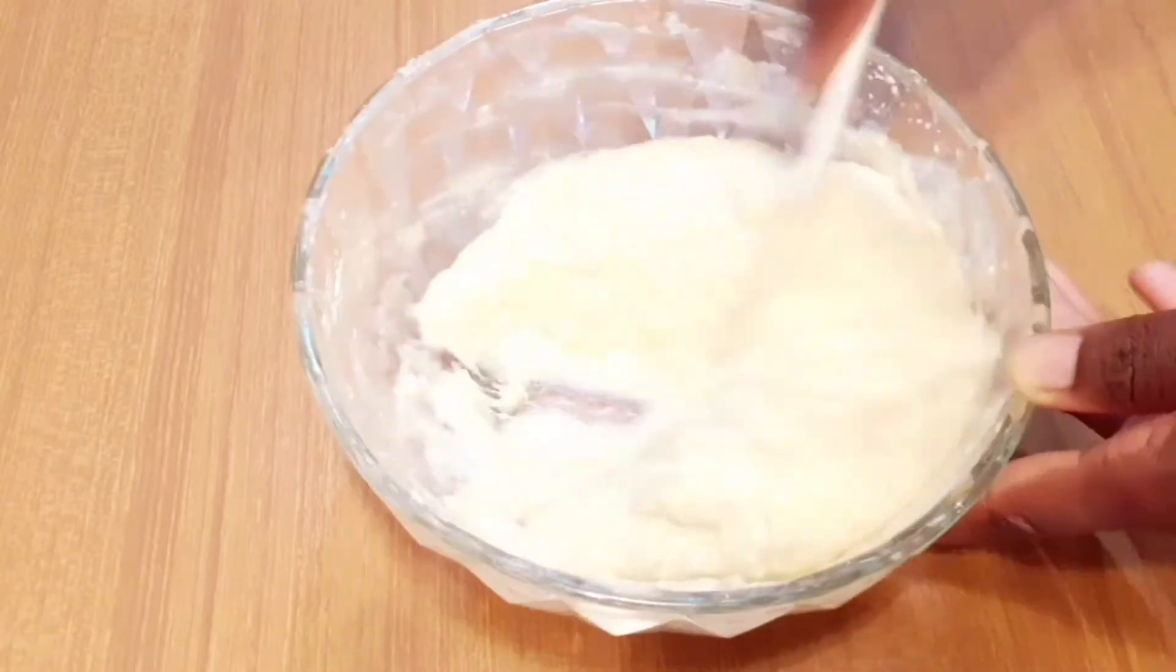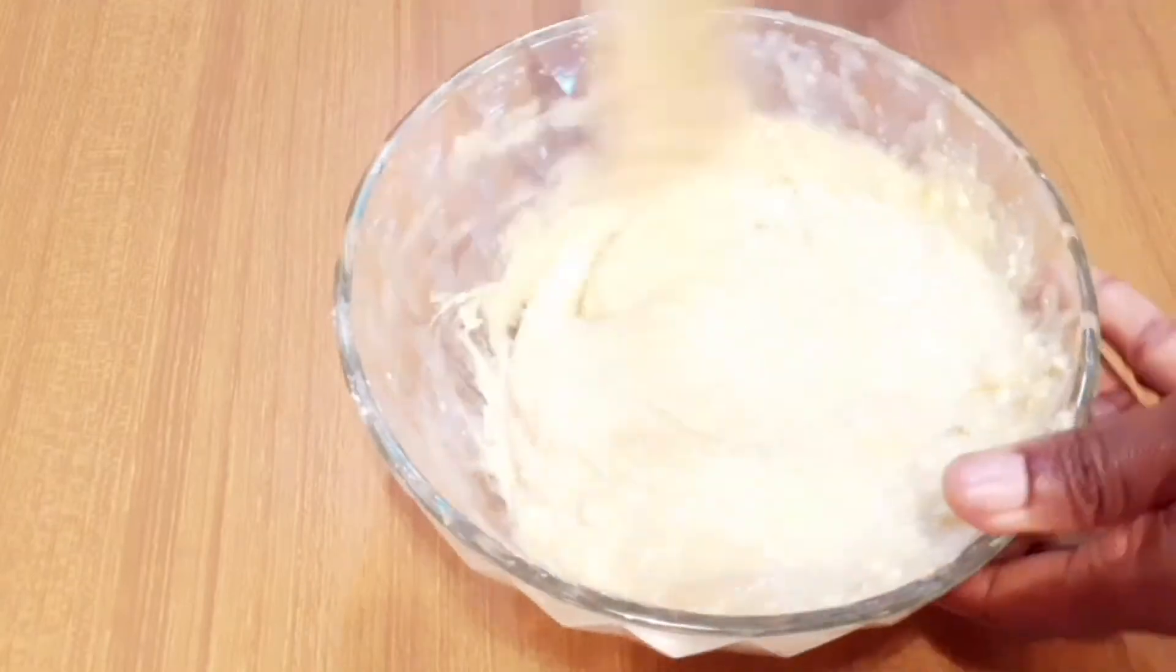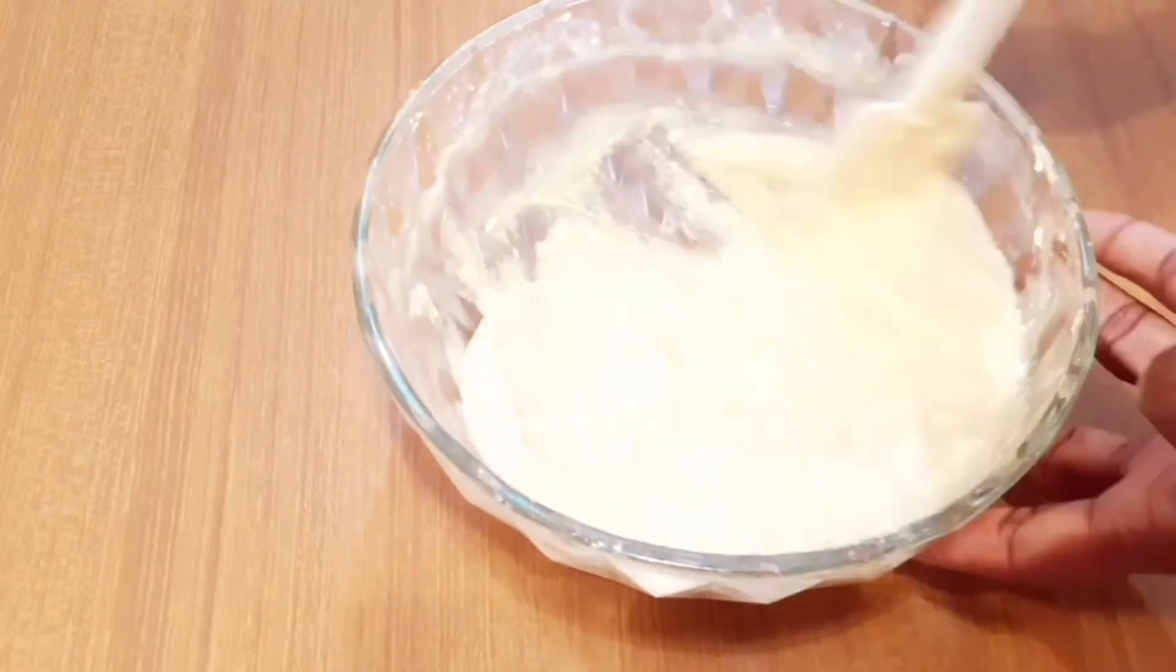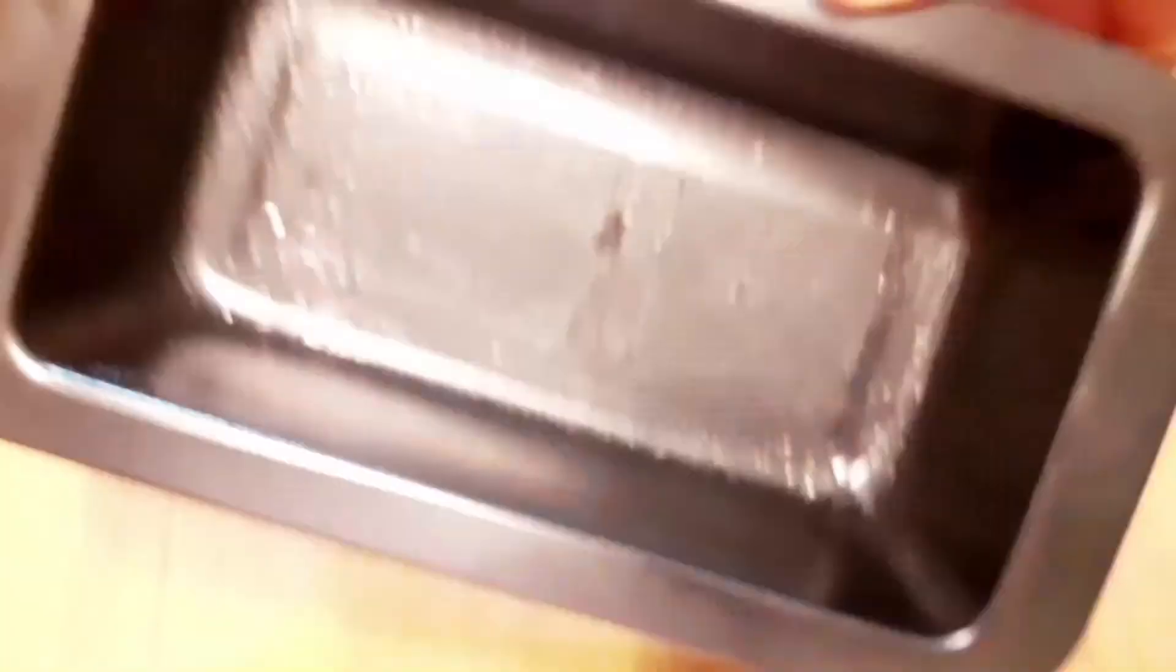If you want to make more of this banana cake, just multiply the ingredients. This is what it looks like after mixing, it's not too light. Then I'm going to get a pan and rub some vegetable oil into it or butter so that it doesn't stick to the pan. Then I'll transfer it into the pan.